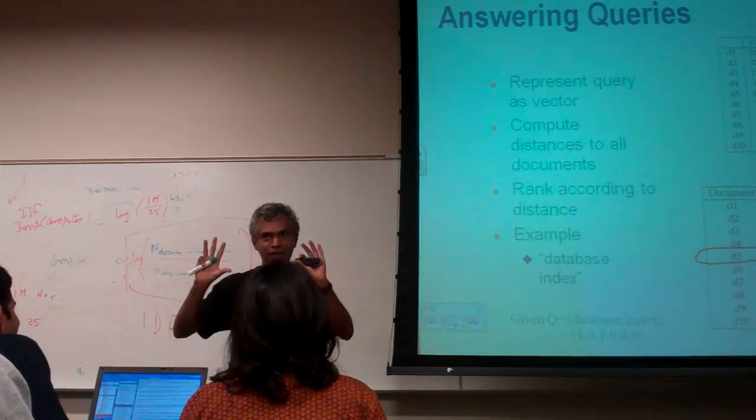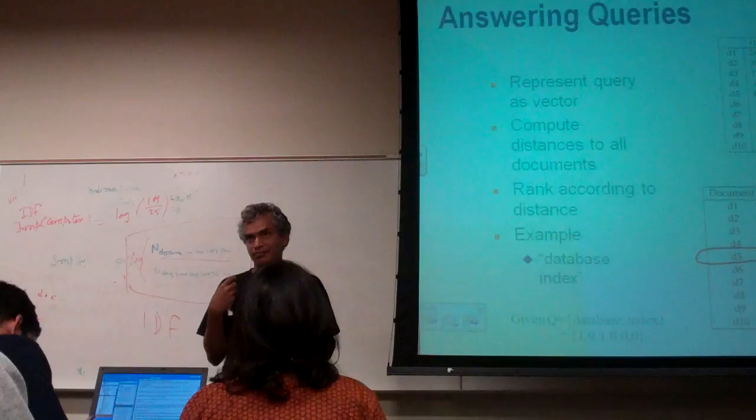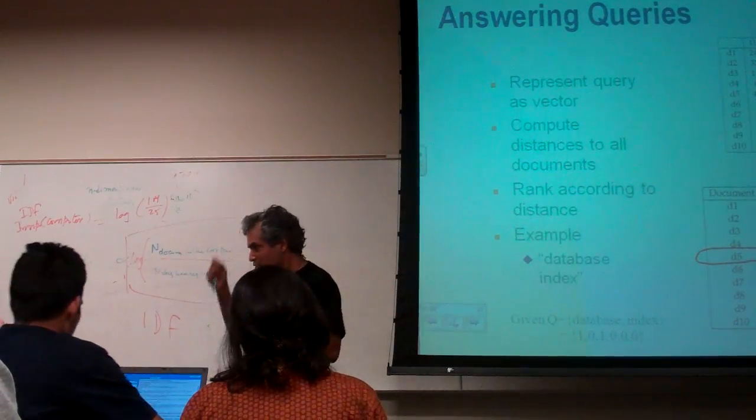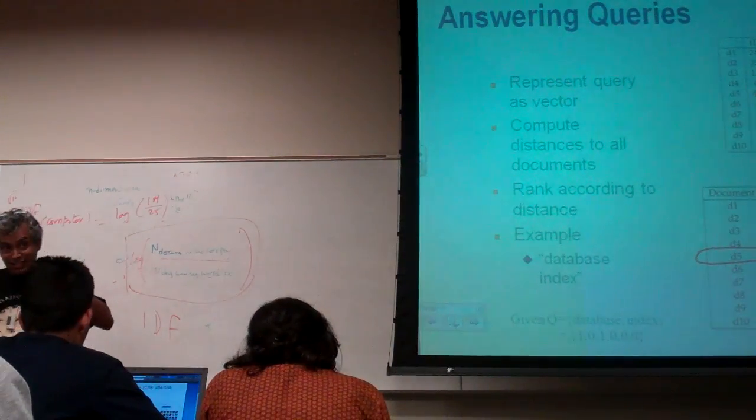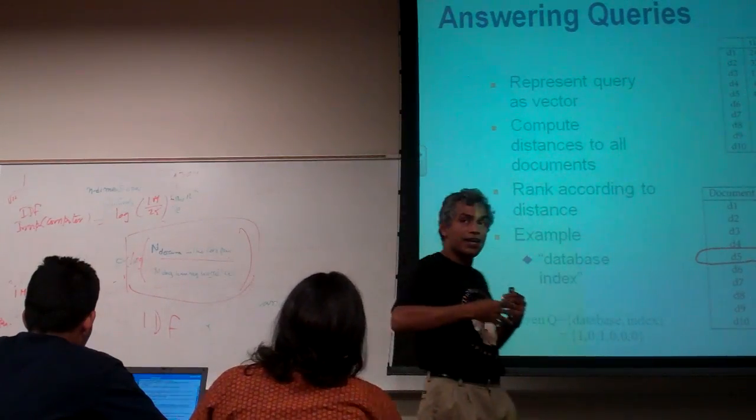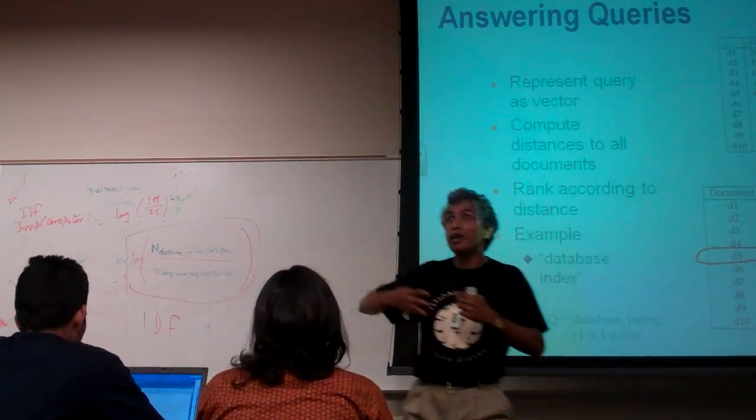But I also have 10 fingers, but you don't care about it, because everybody has 10 fingers. Do you see what I'm saying? So first you capture IDF, which is what features are important. And then you capture which document has more of those features.